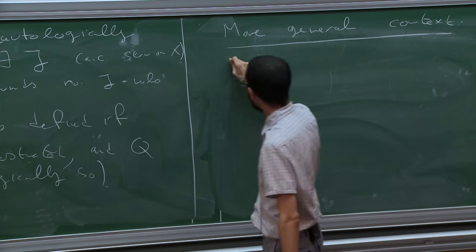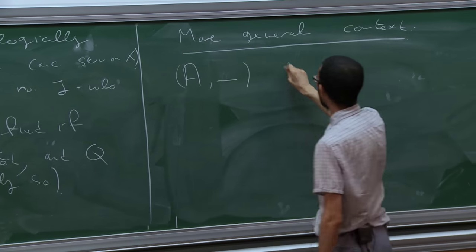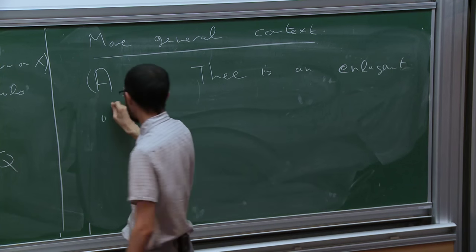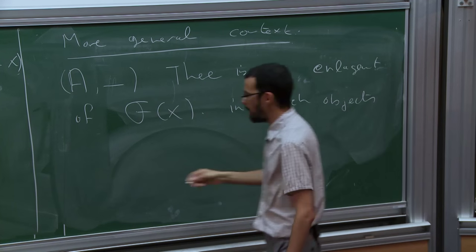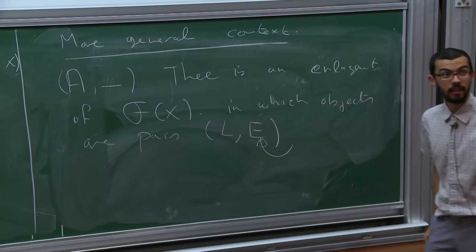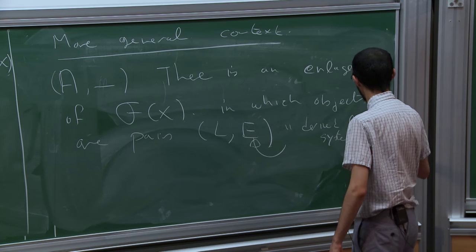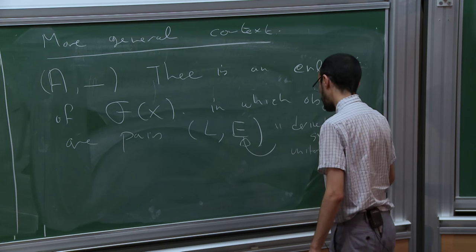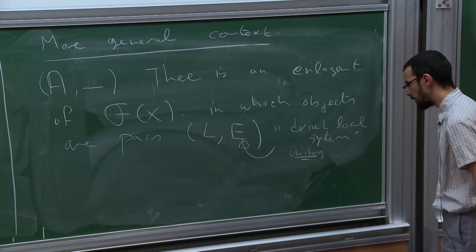But there is some more general context, which I think is important to realize: this group is really just a very small part of a general structure. So in fact there is an enlargement. Unfortunately there's nothing but this in the literature — some year I will write this down. There is an enlargement of the Fukaya category, in which objects are pairs (L, E), where now E is not finite rank anymore. So this is a derived local system, which is in an appropriate sense unitary — which is actually the most delicate part.